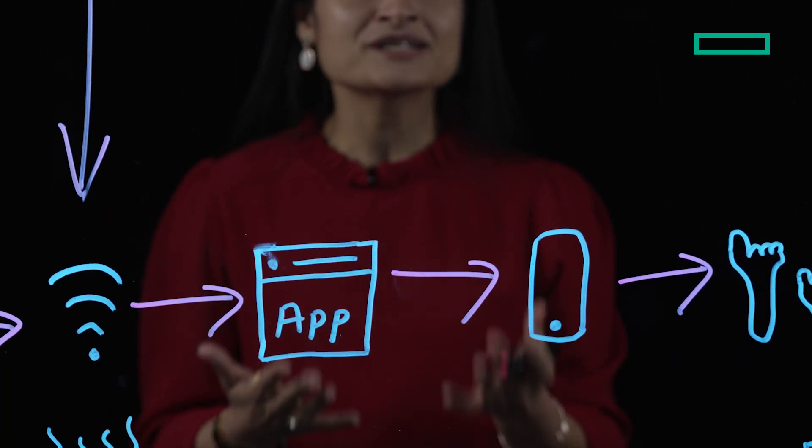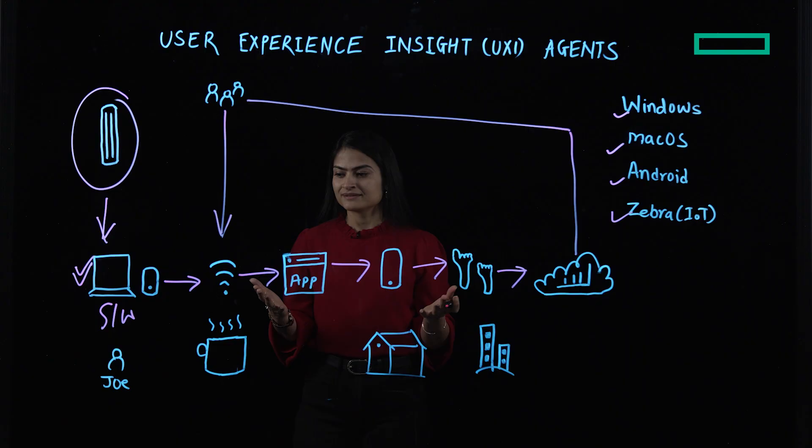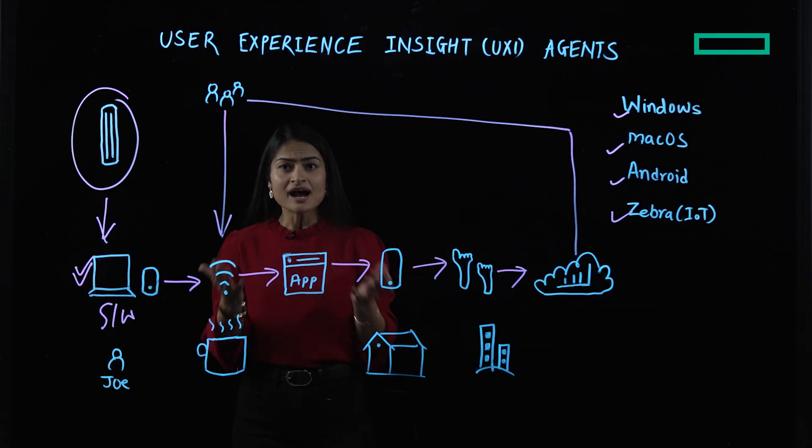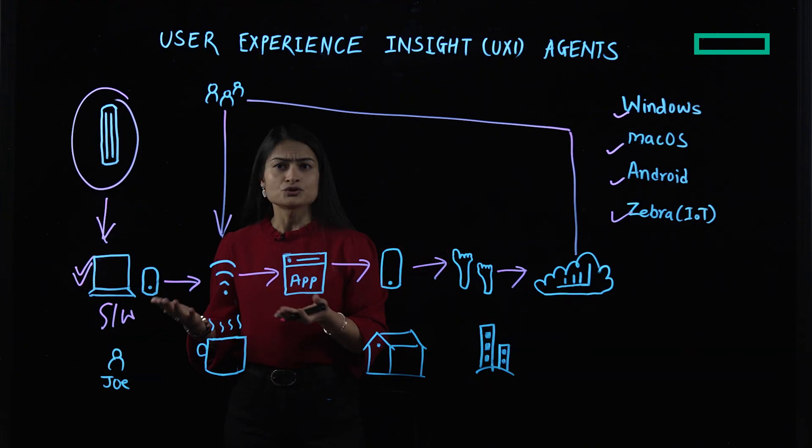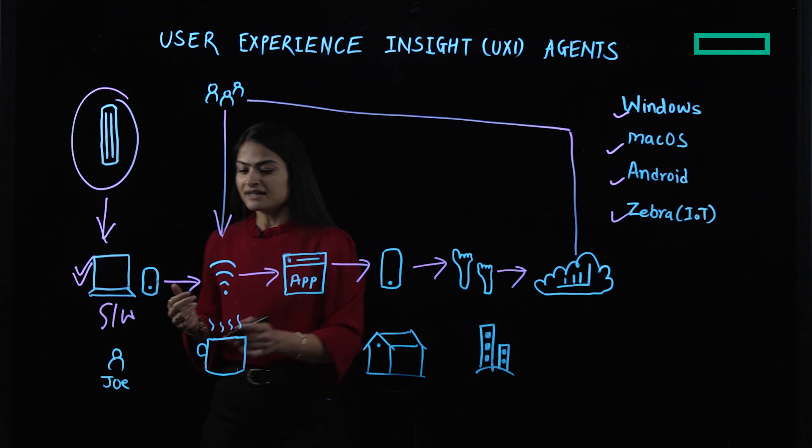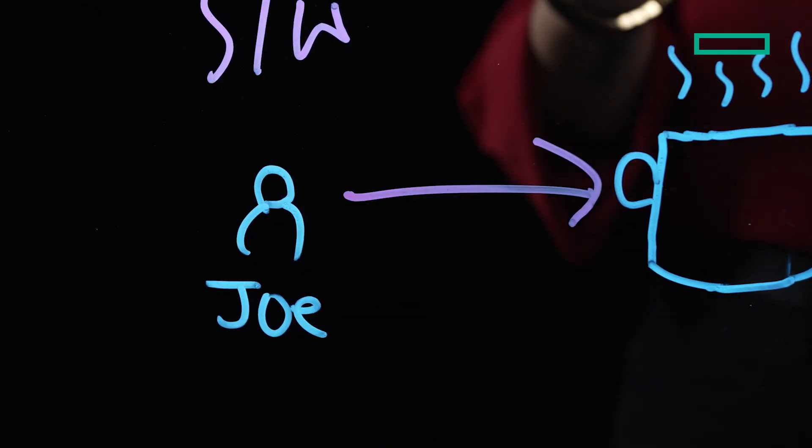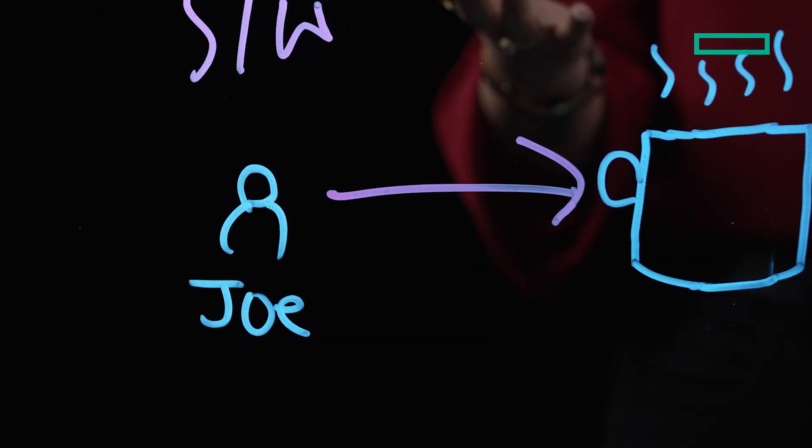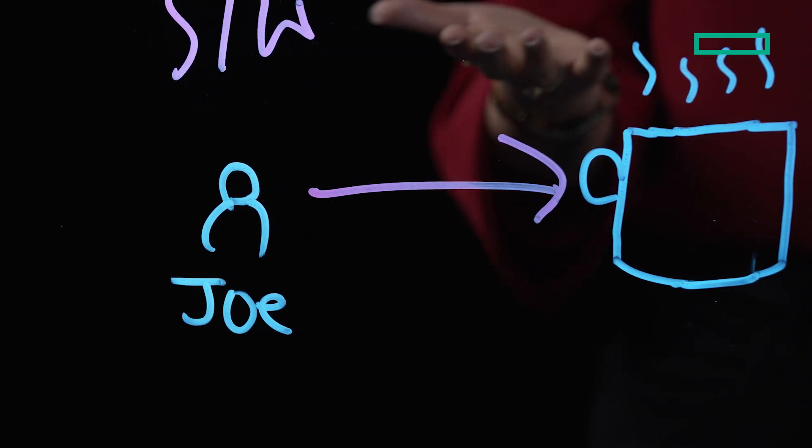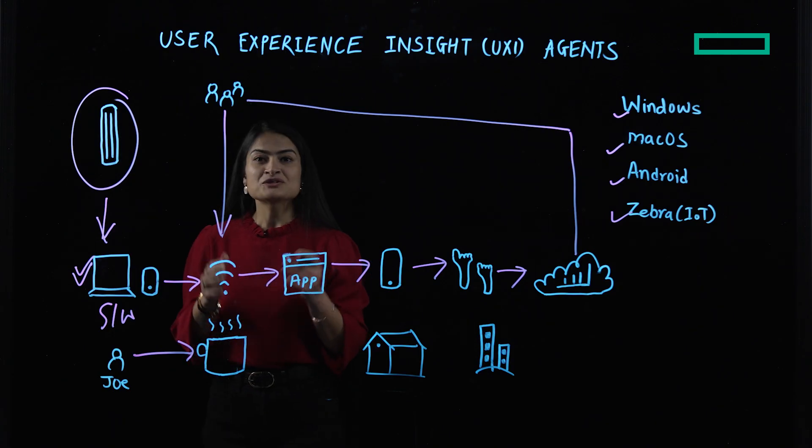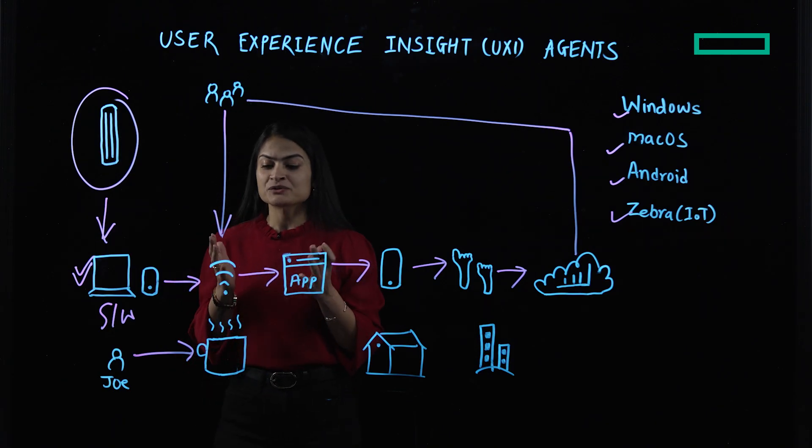But let's see, how does it all work in the real world? For example, you have your exec, let's call Joe for this example. Joe is actually in a coffee shop getting his daily dose of caffeine. Really, who can work without coffee in the morning? Now, Joe is at the coffee shop using Microsoft Teams to get to a call. But unfortunately for Joe, he is facing certain issues with Teams.